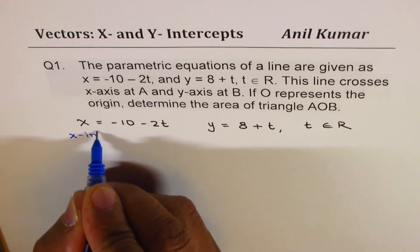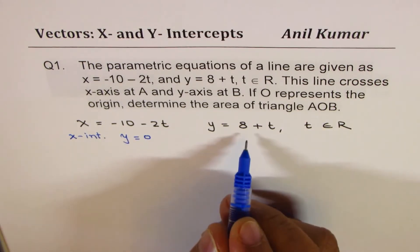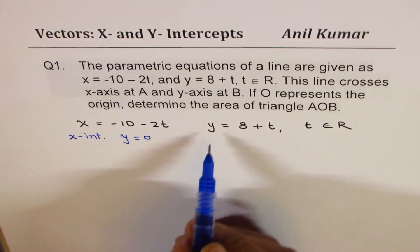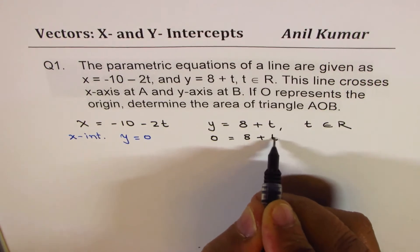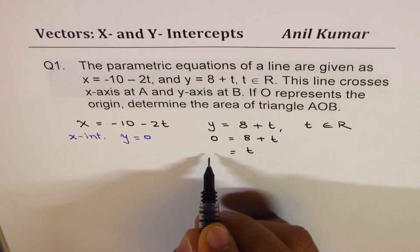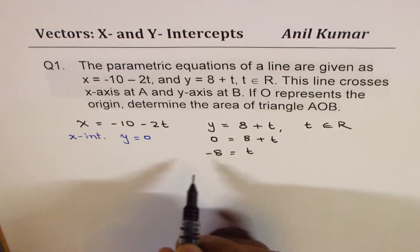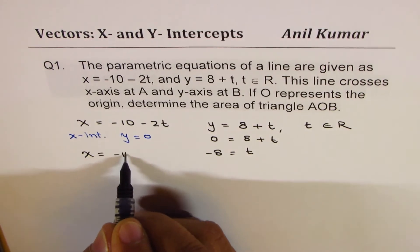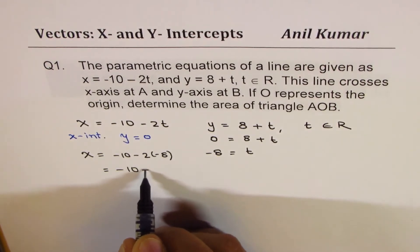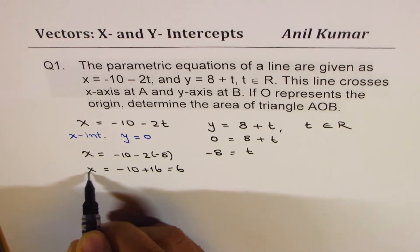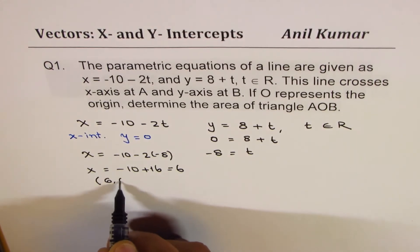If O represents the origin, determine the area of triangle AOB. To find the x-intercept, we write y equals to 0. Substituting 0: 8 plus t equals 0, giving t equals minus 8. Substituting minus 8 for t in the x equation: x equals minus 10 minus 2 times minus 8, which is minus 10 plus 16, that is 6. So the x-intercept is at (6, 0).